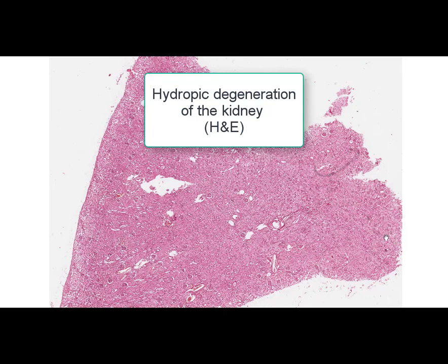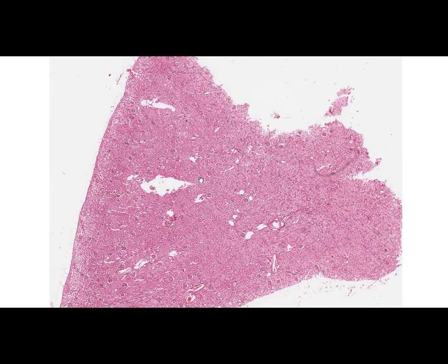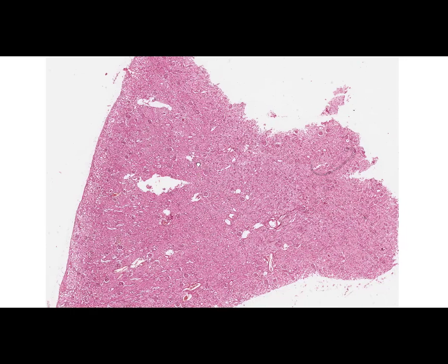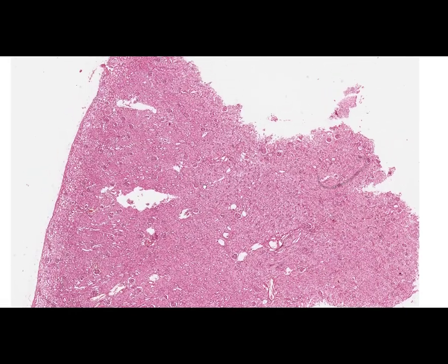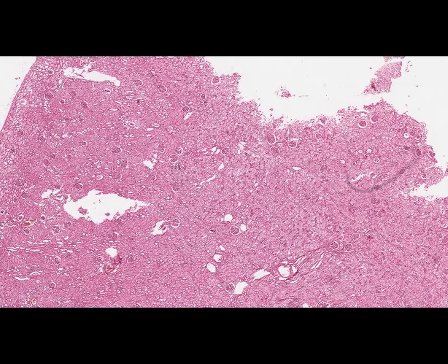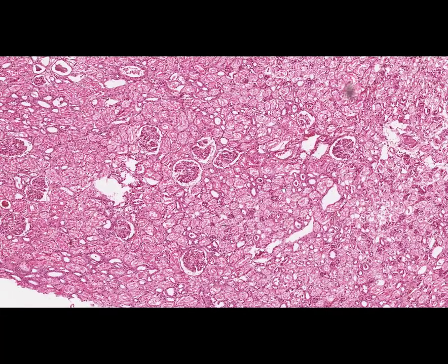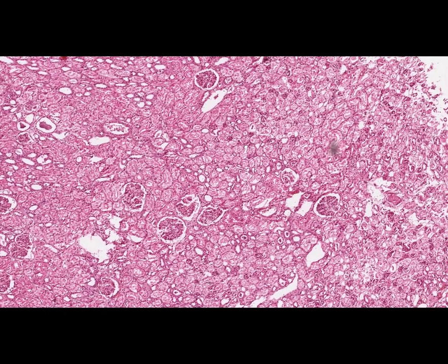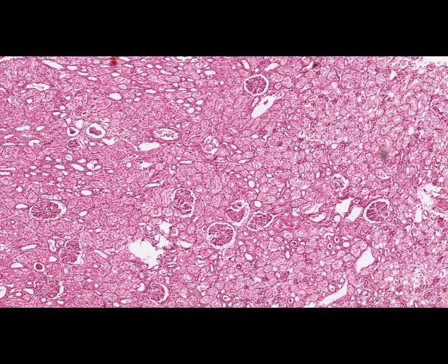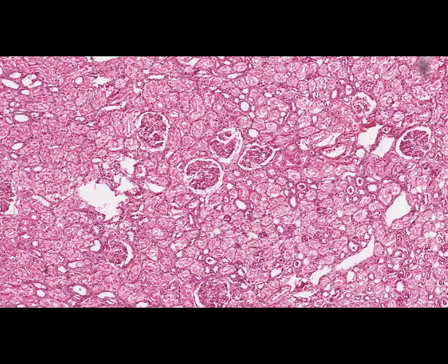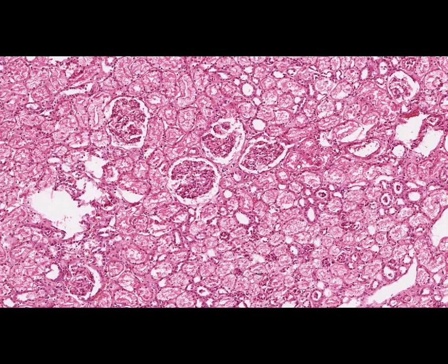Kidney tissue can be found on this slide. The stain is hematoxylin and eosin, and the presented pathology is hydropic degeneration of the kidney. Hydropic degeneration is an intracellular protein degeneration resulting from changes in physical and chemical properties of intracellular proteins, which finally lead to cell liquefaction or coagulation, causing an excessive amount of water to accumulate inside the cell in the form of vacuoles.